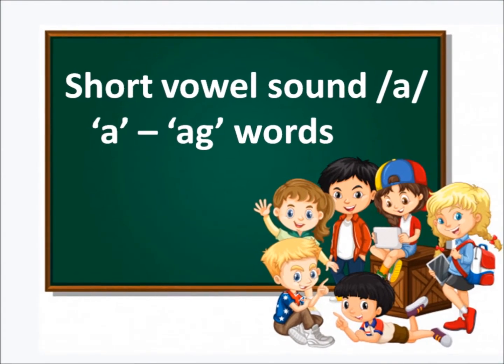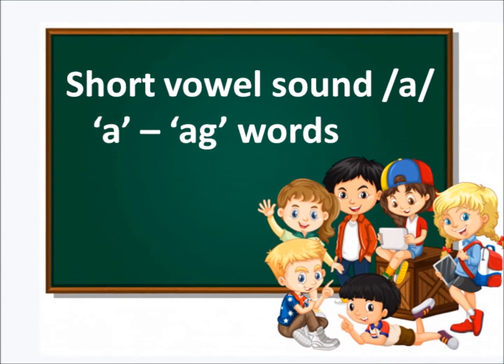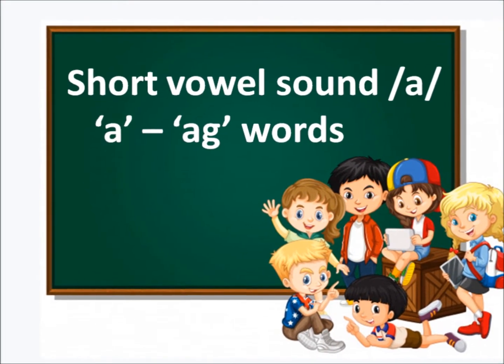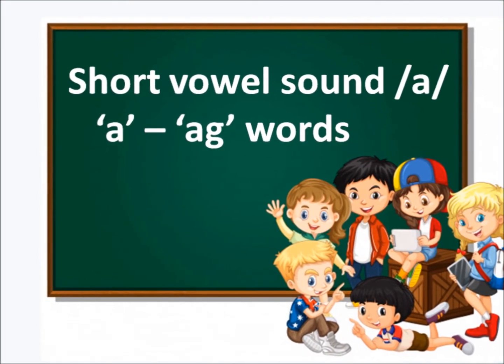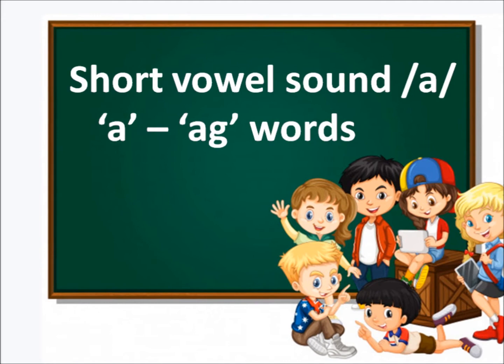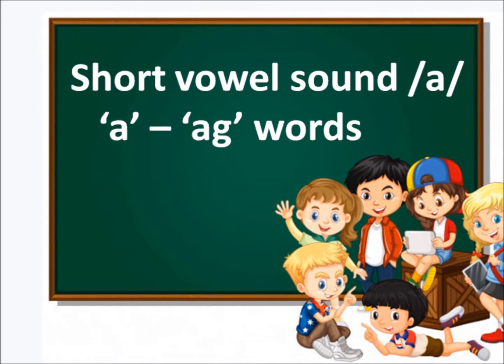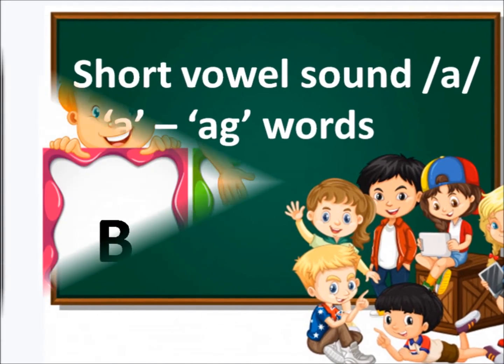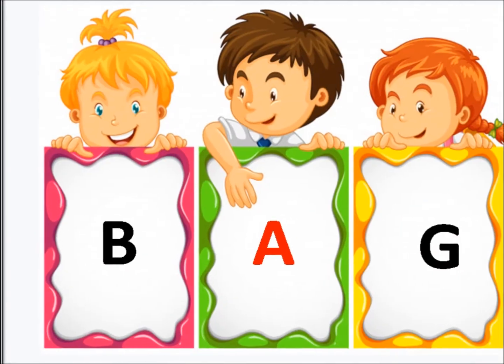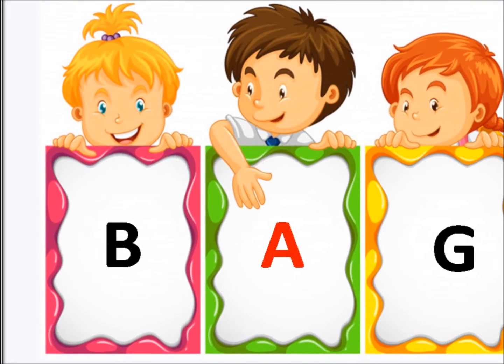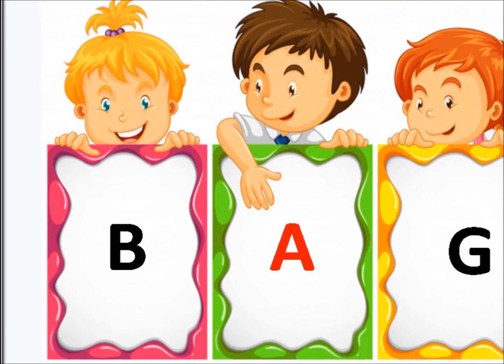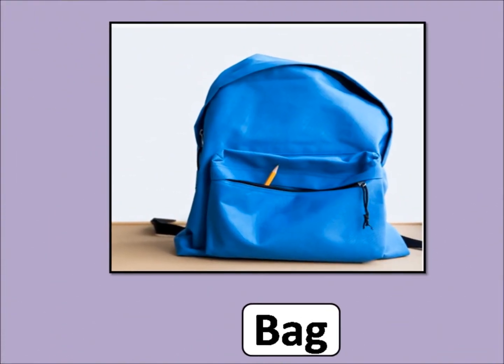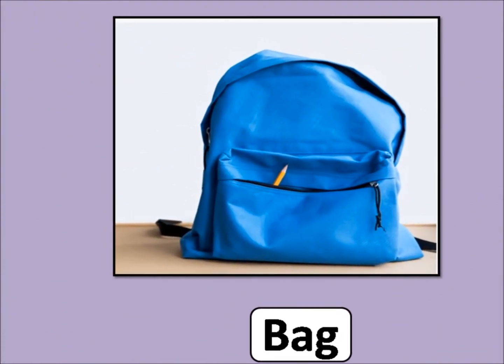Next one is AG words. It will sound like: A, G — Ag. Let's start. B, A, G — B, Ag — Bag.